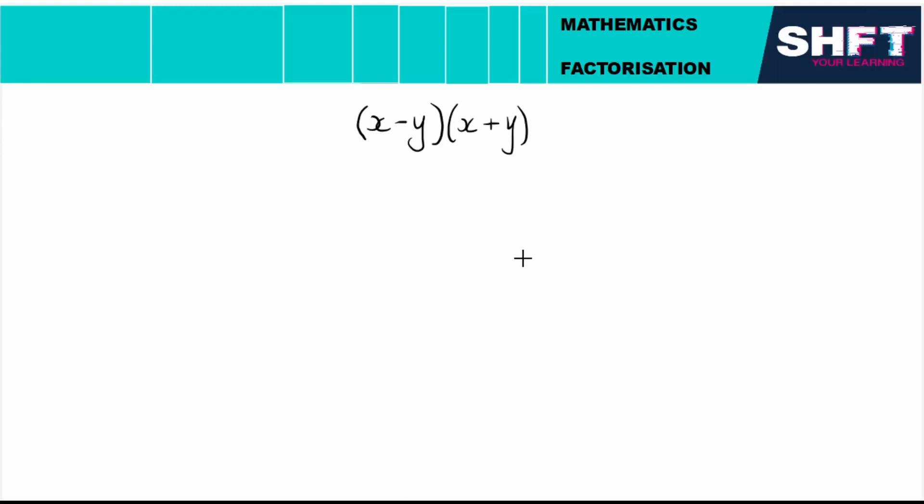Before we start, I want us to look back at something I mentioned in the previous video on taking out the highest common factor. If you've not seen that, go check that out. But something that I said was that factorization is the opposite of simplification by distribution.